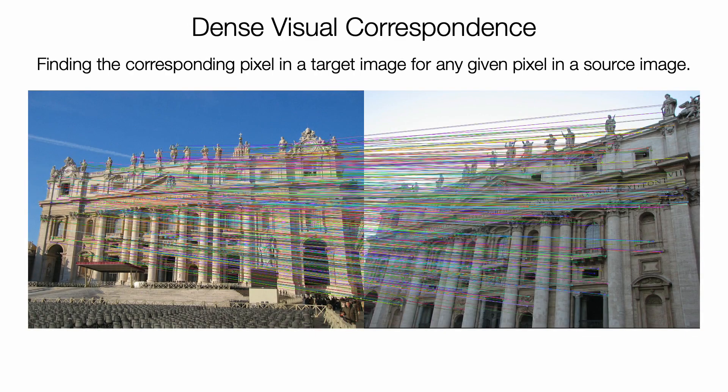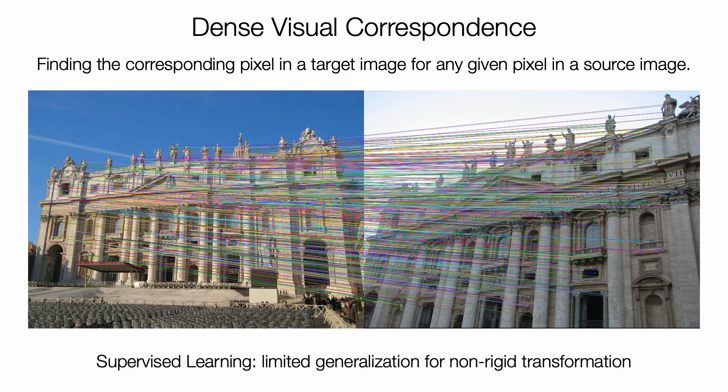In this project, we study the problem of dense visual correspondence. It's about finding the corresponding pixel in a target image for any given pixel in a source image. One approach to this problem is supervised learning from labeled datasets. This approach has limited generalization to non-rigid transformations because most datasets are different camera views of the same rigid scene.